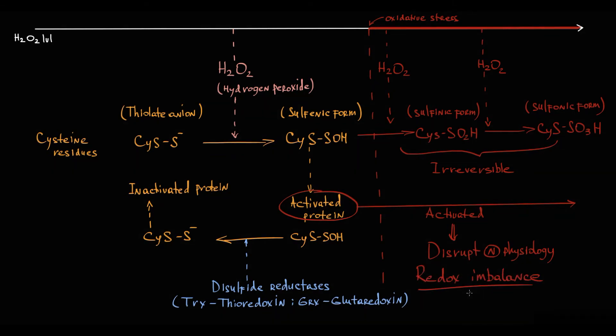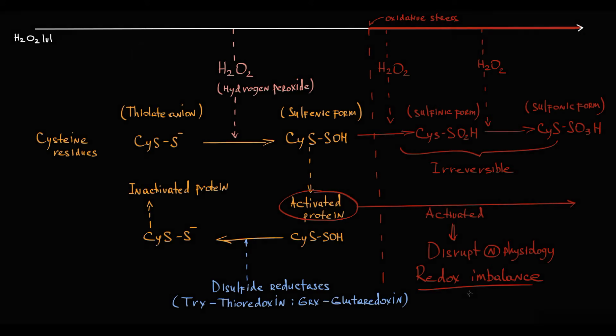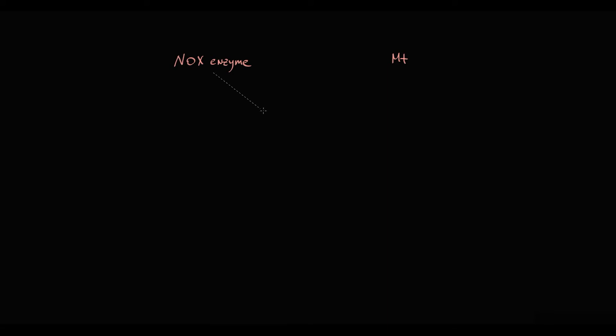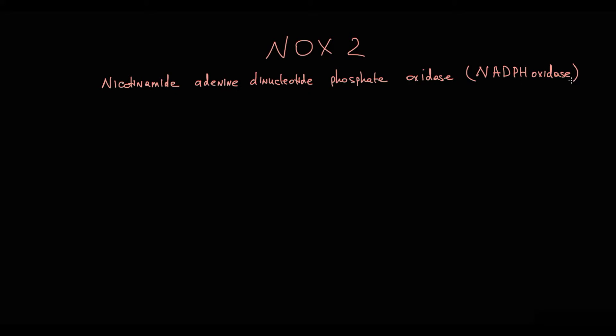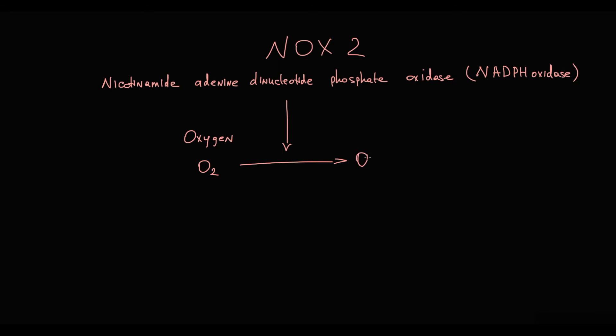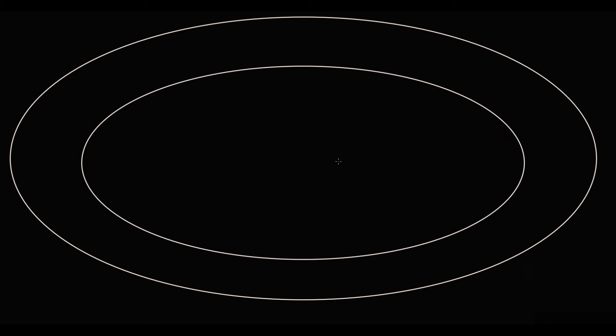The level of reactive oxygen species, particularly hydrogen peroxide, must be strictly controlled and maintained within very narrow frames. There are two major sources of reactive oxygen species inside the cell: they can be produced by NOX2 enzyme or by mitochondria, and both initially produce superoxide molecules. NOX2 stands for nicotinamide adenine dinucleotide phosphate oxidase; this enzyme is located on the cell membrane and converts oxygen to superoxide. In the case of mitochondria, reactive oxygen species are formed during oxidative phosphorylation.